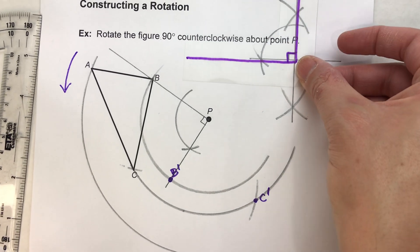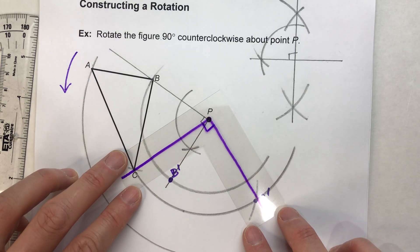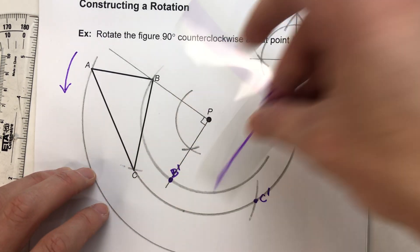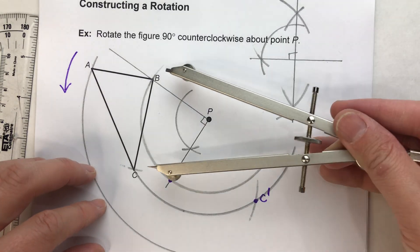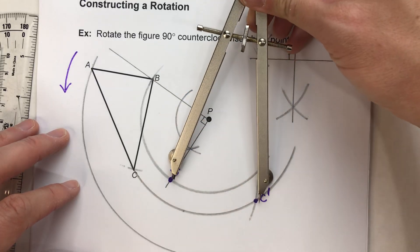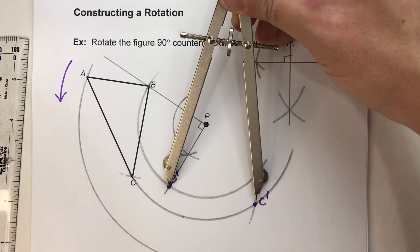But again, you could have just duplicated the angle and you would have got the exact same thing. Notice I get the exact same thing if I duplicate the angle. But isn't it a lot faster to just use the properties of what you know about rotations? That that distance from B to C is not going to change when you rotate it because it's just one arc.